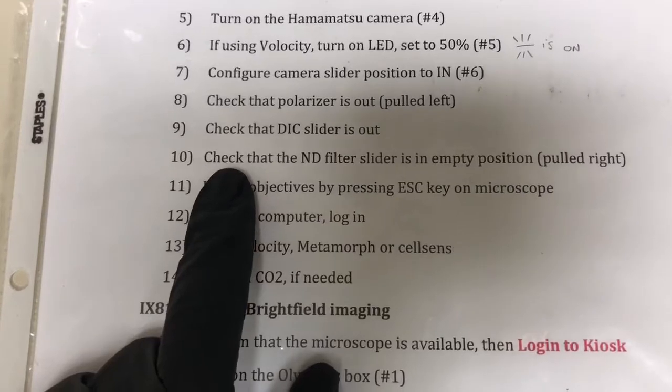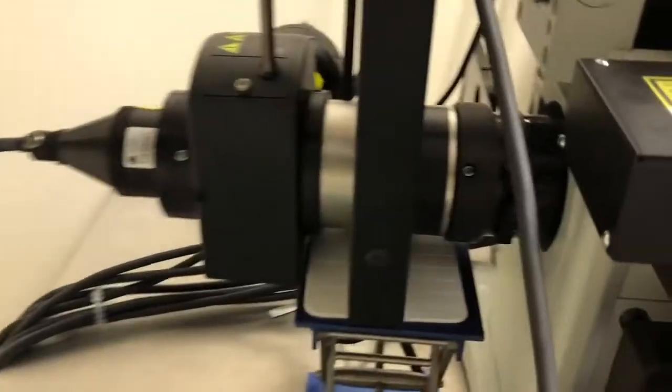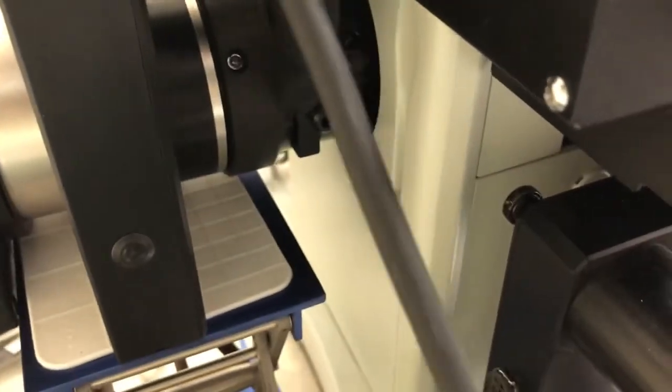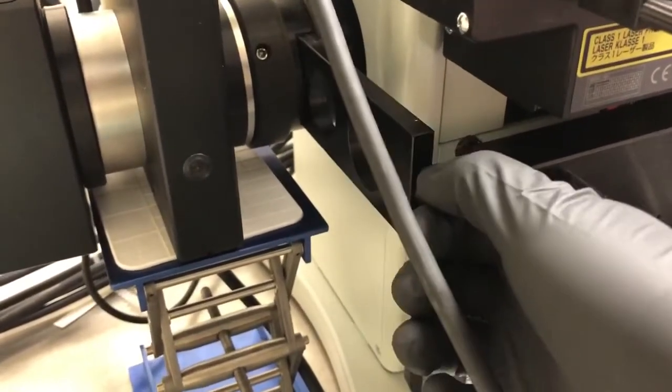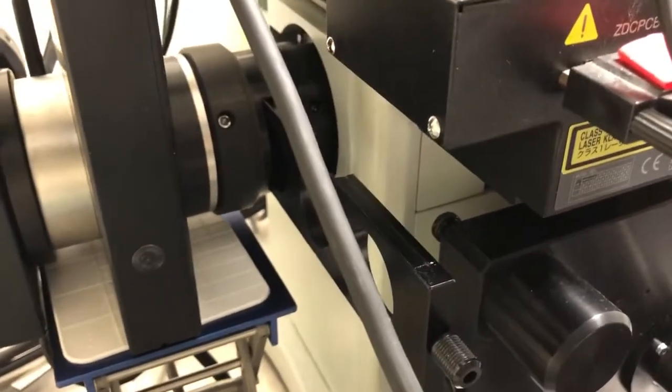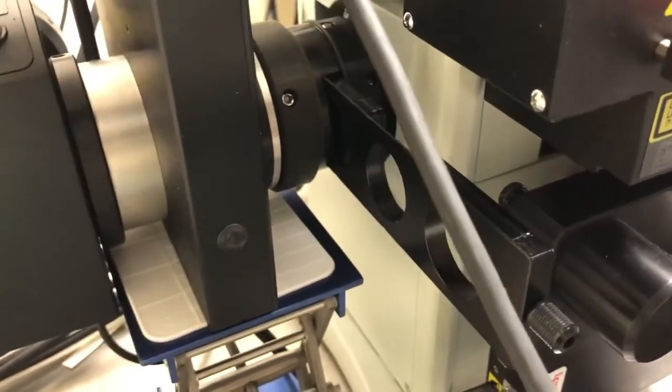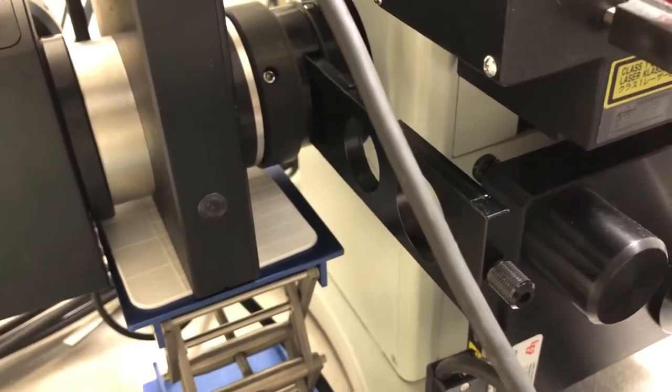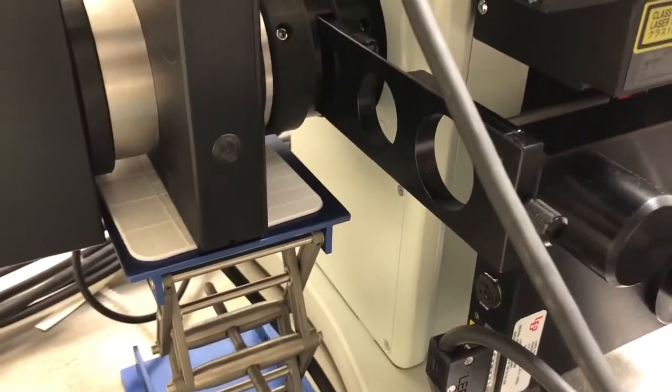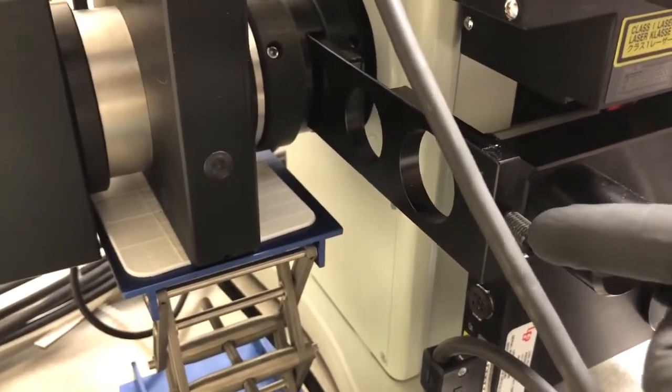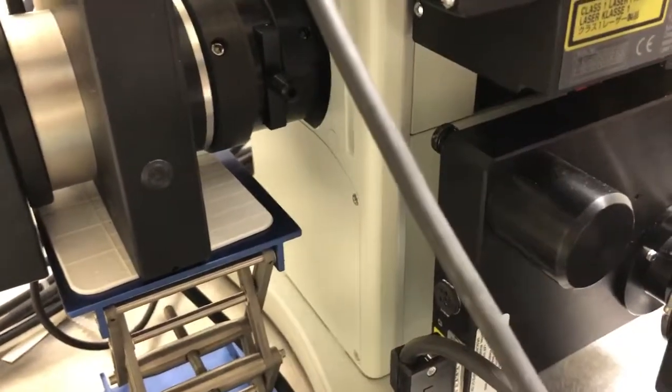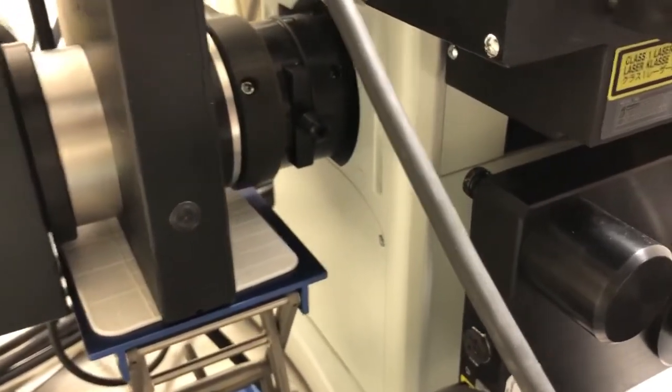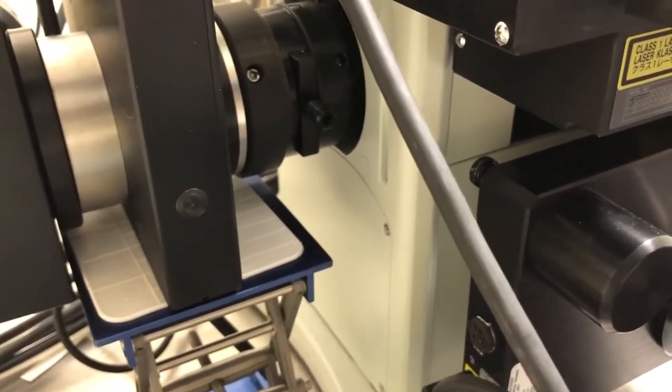If when you accidentally pull it out, you're not sure what orientation it goes in because it can go either this way or that way, there's a little drawing here that shows you how it's supposed to be inserted into that slot. Step number 10. Check that the ND filter slider is in the empty position. So at the back of the microscope here, there's a slider which can be pulled from multiple positions. And in one of these positions, there are some filters that block a large percentage of the light that goes into the microscope. Those are used for live cell imaging. Unless you are doing that and people typically are not doing that, for most of you, you just want this pushed all the way to the right or pulled all the way to the right. So in that configuration, we'll just let the full amount of light through.